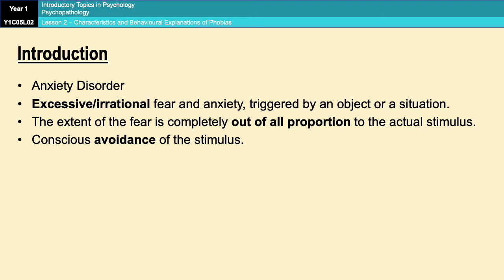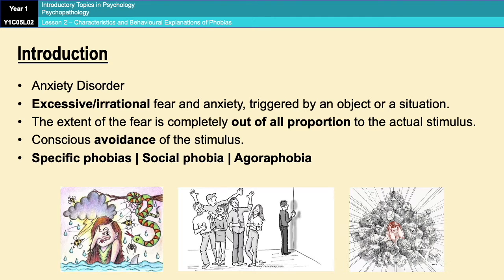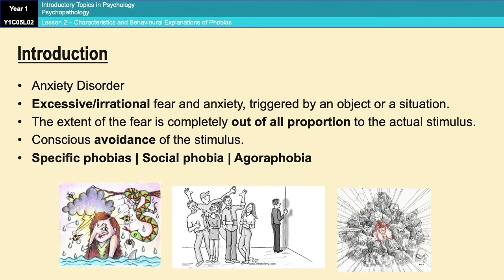There are three main types of phobias: specific phobias, social phobia, and agoraphobia. On the next slide we'll have a look at what they actually are.